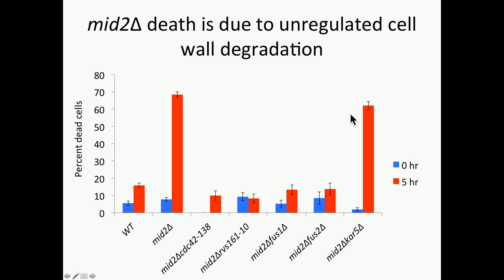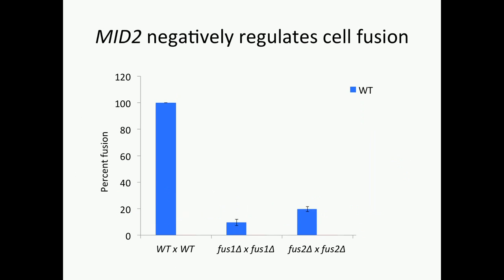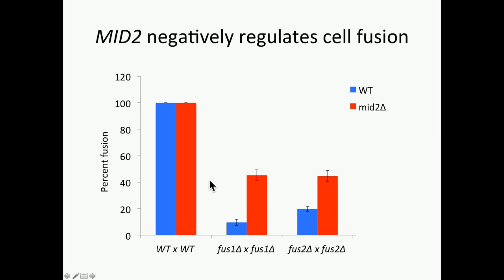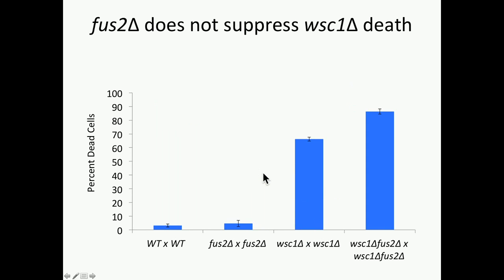We then asked the reciprocal question: can loss of mid2 suppress the fusion defect seen in loss of fusion proteins? In a Fus1 by Fus1 or Fus2 by Fus2 mating, these cells do not fuse nearly as well as wild-type. If we delete MID2 in this background, we can in fact partially suppress this fusion defect.